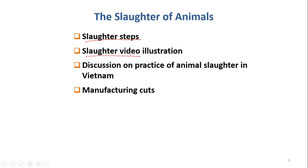In the past, when we studied this chapter, we would go to a real slaughterhouse to see what happened there. But now you can actually watch video clips and know already — you don't need to go directly to the factory. And then we will see some photos of the real practice of animal slaughter in Vietnam, to see where we can still improve and where things are already good.